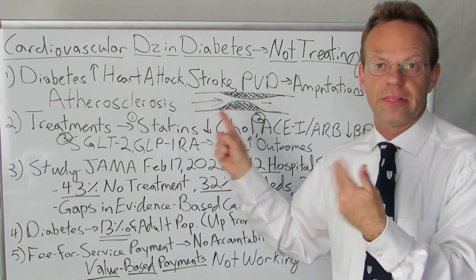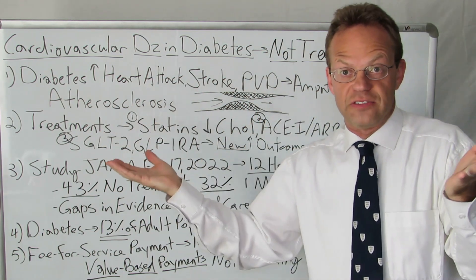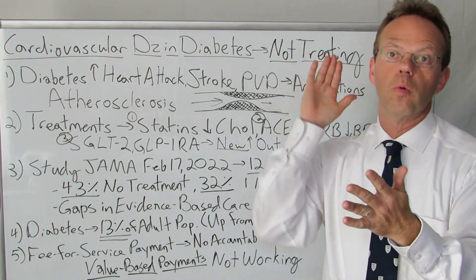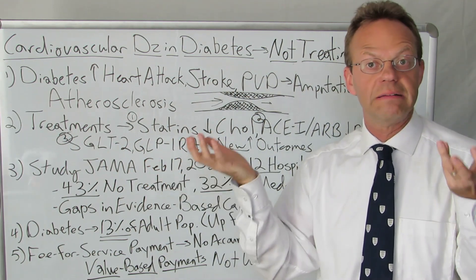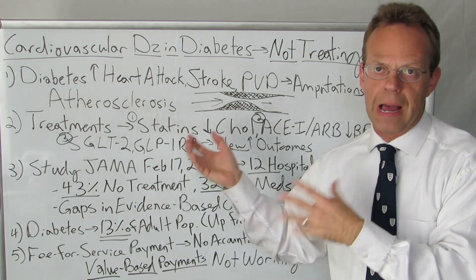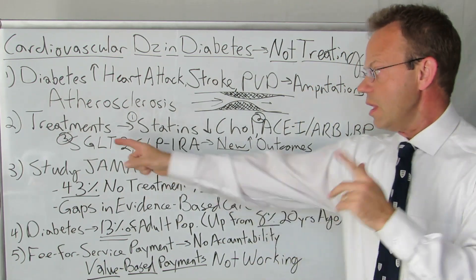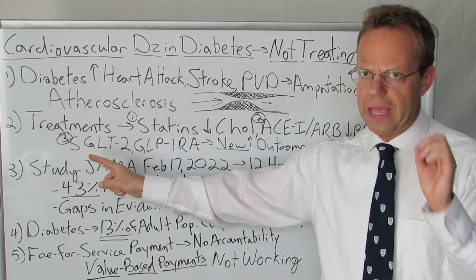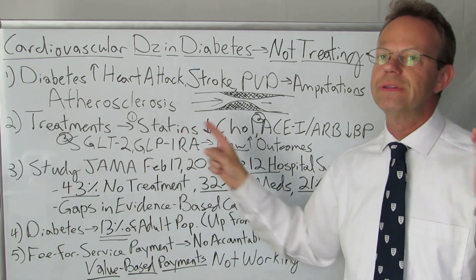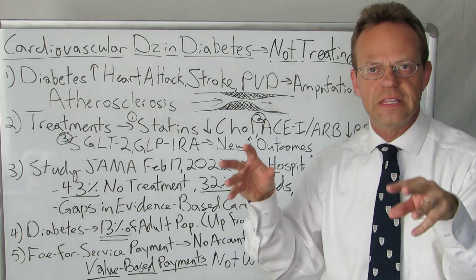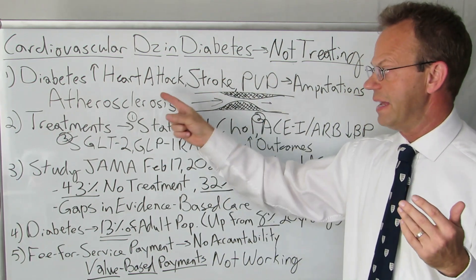Atherosclerosis is silent — you cannot feel it, and you cannot feel when those plaques explode. This is why people have 'I feel fine' syndrome: I feel fine, and then all of a sudden — wham, heart attack; wham, stroke; wham, non-healing foot ulcers; wham, their kidneys conk out over time and they have to go on dialysis. This silent disease is hugely problematic for individuals and for those who pay for healthcare. The third category of medications — SGLT-2 inhibitors and GLP-1 receptor agonists — are new, and they do improve outcomes for people with diabetes and cardiovascular disease.